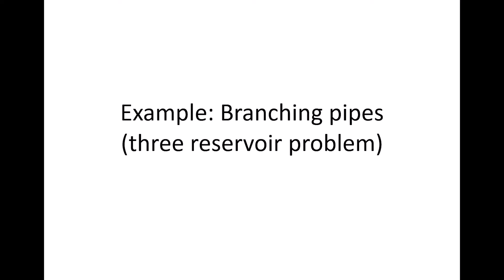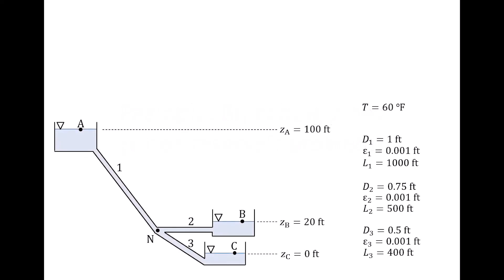In this lesson, we will work through an example of a three-reservoir problem. Here we have three water reservoirs connected by three pipes, all of which are connected at a node N. The water temperature is 60 degrees Fahrenheit, and the pipe diameters, absolute roughnesses, and lengths are all known.